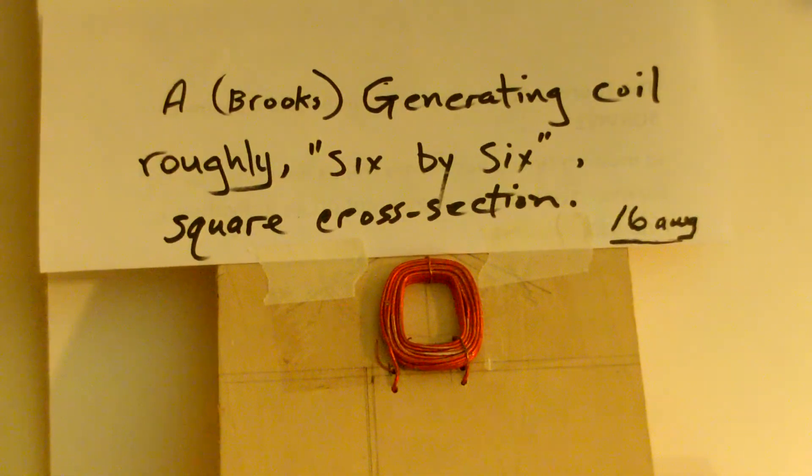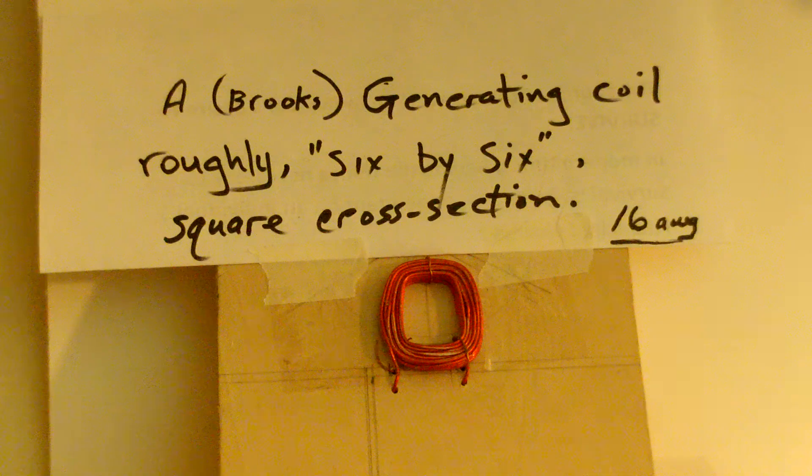So, this is a decent generating coil. It's a Brooks coil, square cross-section, made with 16-gauge wire. That is the smallest wire you want to use for this, for a power generating coil. Should be 14 or 16. But I think one can prove it, prove a concept with 16-gauge conductor.